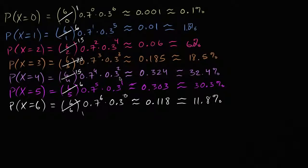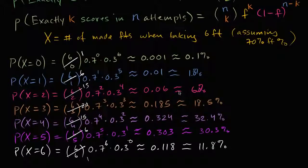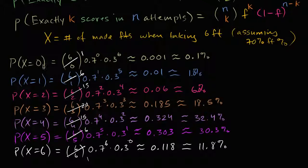You can plot these values to visualize what the probability distribution looks like for this example — I encourage you to do that, just like we did in the first example with the fair coin. This essentially gives you the complete probability distribution for the random variable in question. These are the only seven values that X can take on — it can't be negative one, or 15.5, or pi, or one million — and I've given you the rough probabilities of taking on each of those seven values.